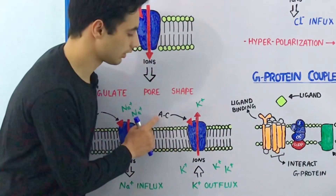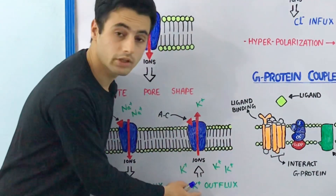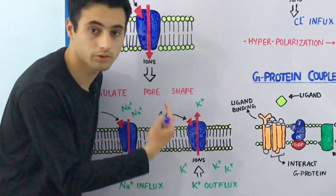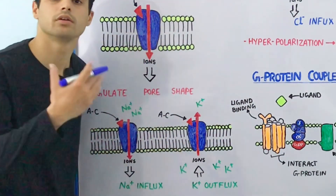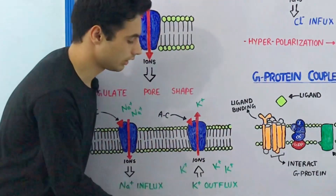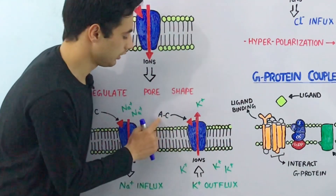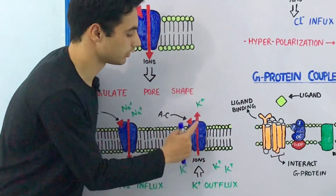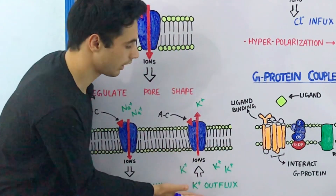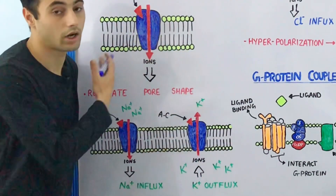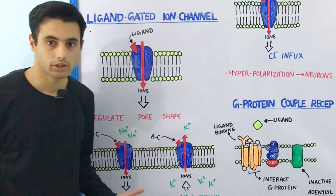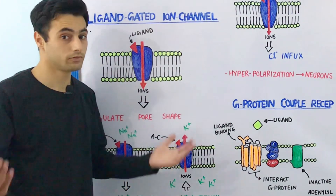On the other hand, the same acetylcholine will cause potassium outflux when it binds with the nicotinic receptor. Potassium is in abundance inside the cell — the concentration of potassium is greater inside the cell. So when acetylcholine binds with the nicotinic receptor, they will regulate the pore shape, open the ion channel, and potassium will move outside of the cell. This is also used during action potential generation, nerve transmission, and contraction of your skeletal muscle.